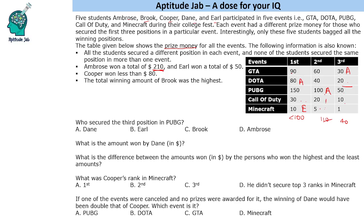With the $90 + $20 case eliminated, Earl wins $20 and $20, making his total $10 + $20 + $20 = $50. So we have determined Earl's winnings. Ambrose's total is $210 and Earl's total is $50 — these two are confirmed. Now we write: Ambrose = $210, Earl = $50.